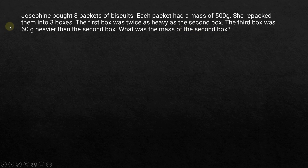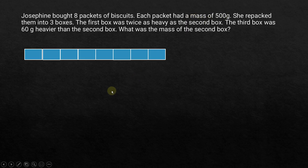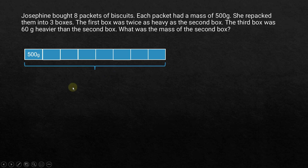There are two parts to this question. First, she bought eight packets of biscuits and each packet had a mass of 500 grams. We can draw eight boxes — eight units — and we know each unit has a mass of 500 grams. Each unit is the same size, meaning they represent the same value, so each one is 500 grams.